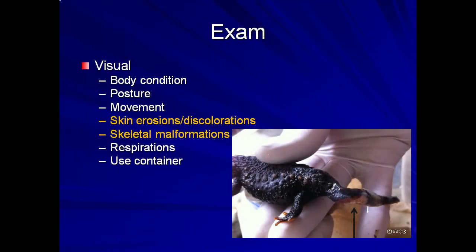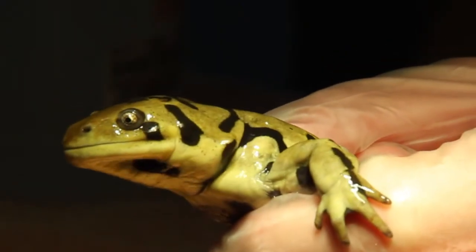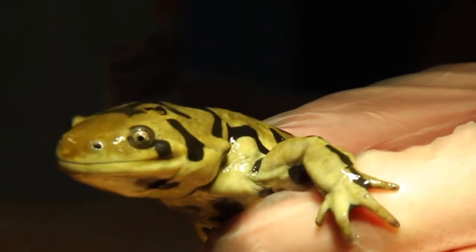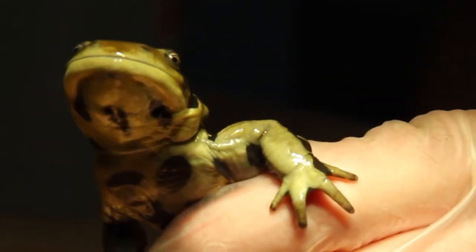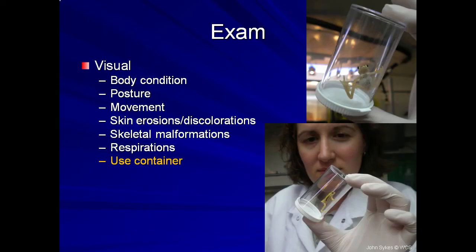Skin erosions, discolorations, and skeletal malformations can generally be easily observed. The rate and depth of respiration should be observed before the animal is stressed by handling. For example, normal gular respirations can be observed in this video, though the rate may be increased as the animal is already being handled. A container can be very useful for doing an exam without handling — all of the above parameters can be observed while the animal is restrained in a clear tube. Animals can also be easily weighed with small plastic containers.